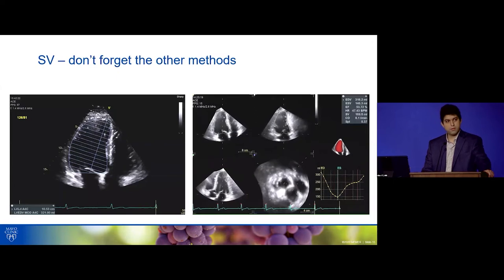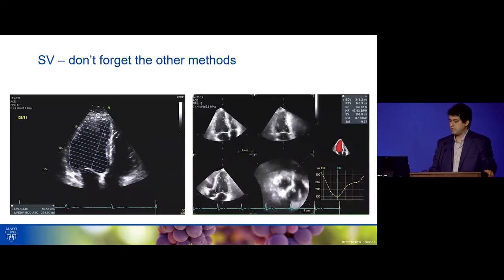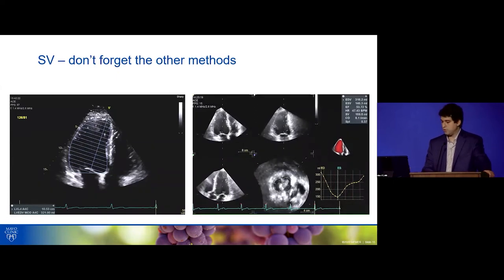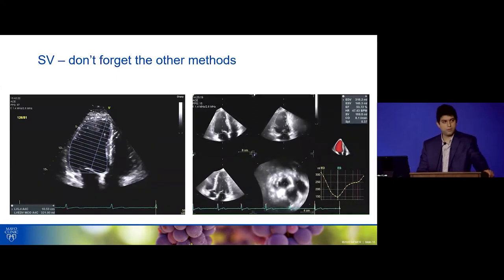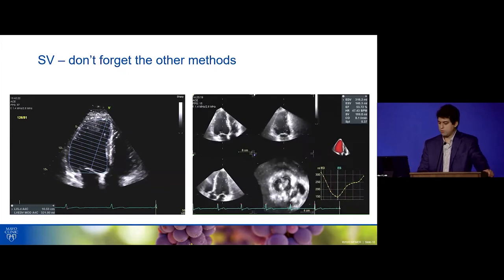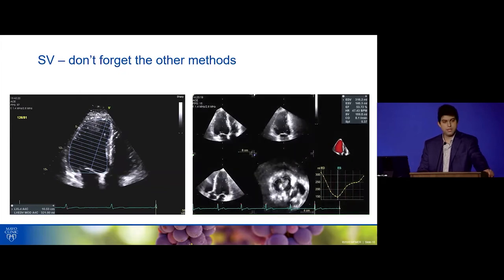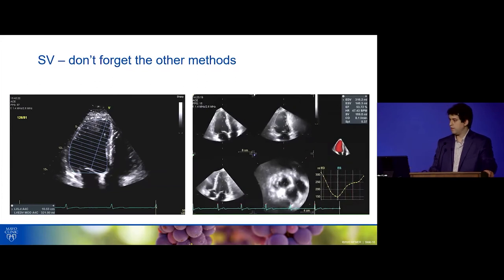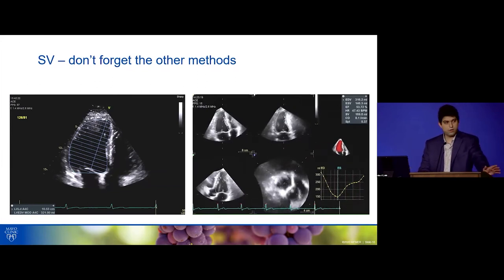Remember that sometimes you can't get a good LVOT-TVI, and don't forget that we have other ways of measuring stroke volume. You can use volumetric methods or 3D echo now. If you can't get it by Doppler, just use other modalities to ensure that all the numbers line up.